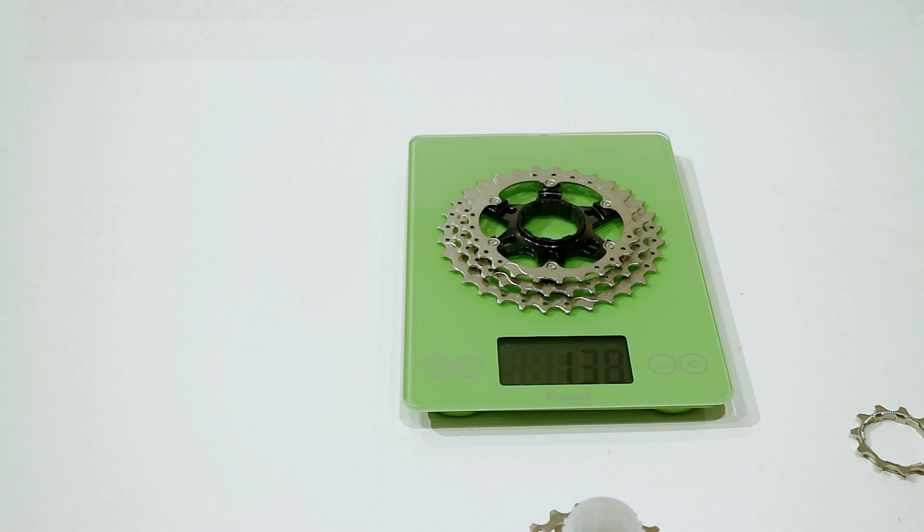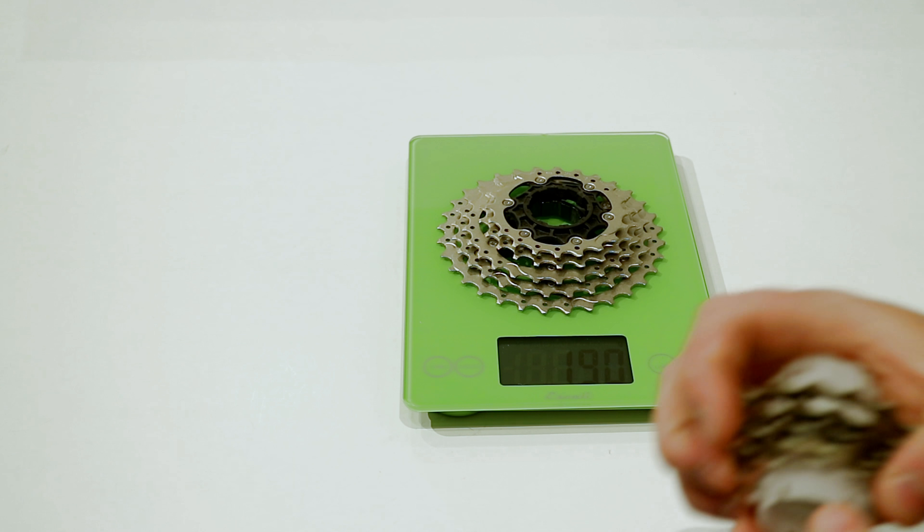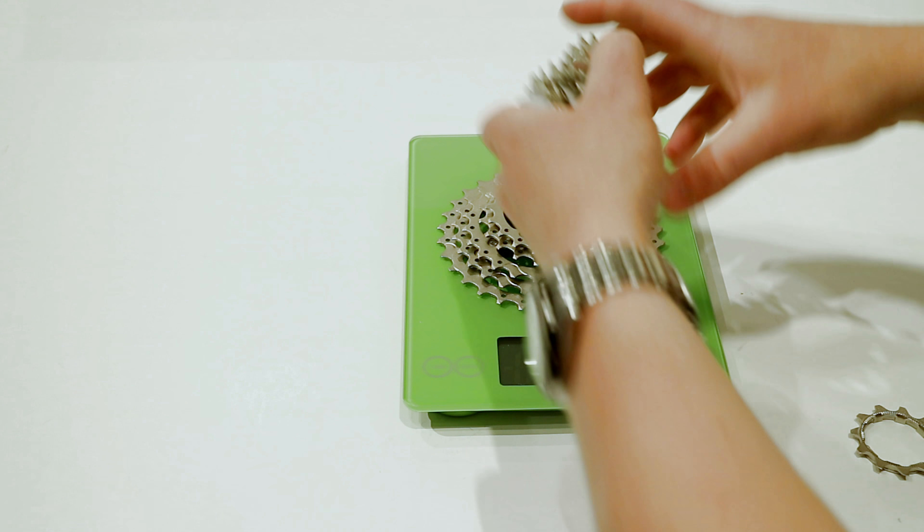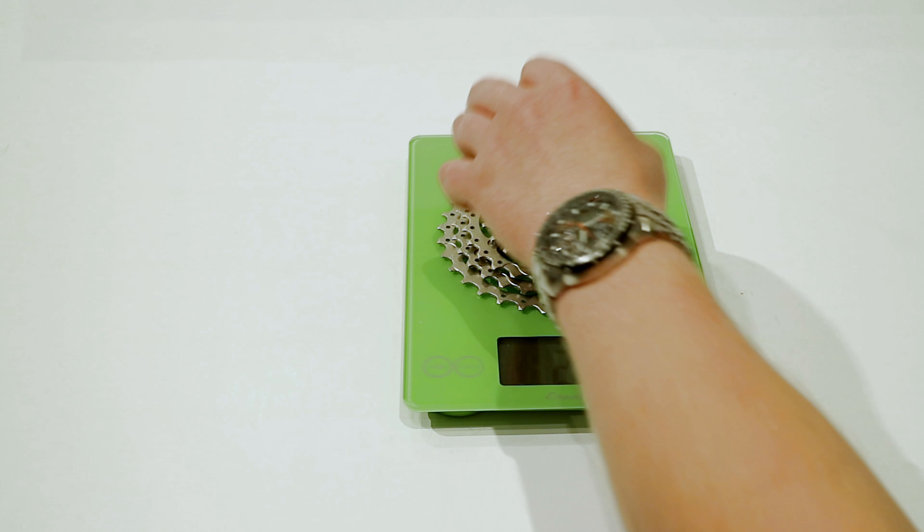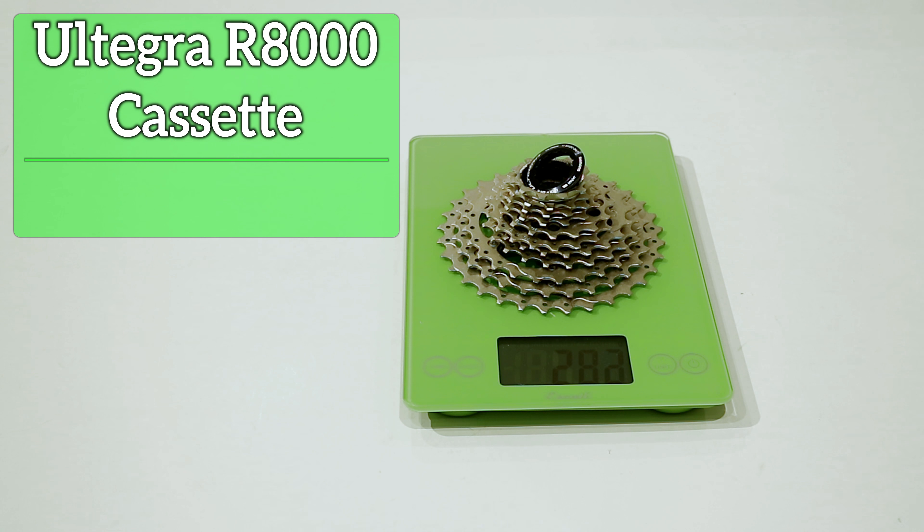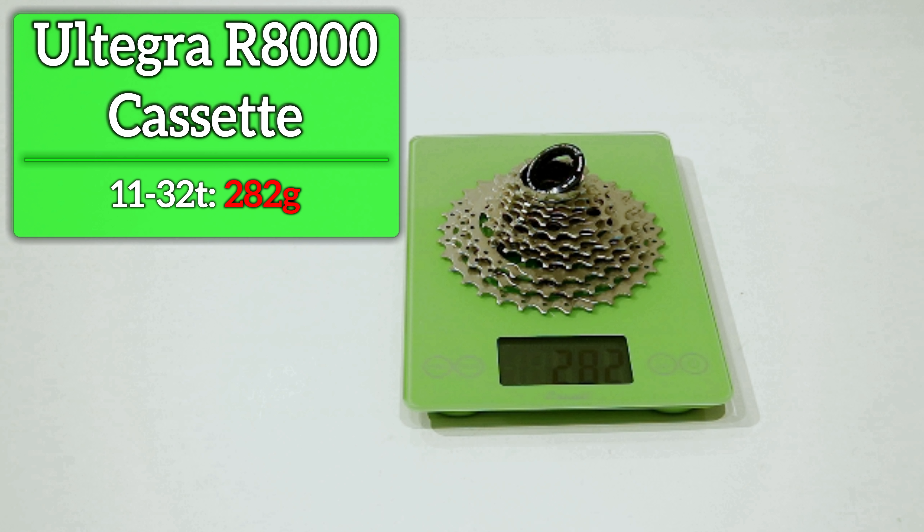So if we put the cassette on, we'll go ahead and place all of our cogs right on. Your total weight for this cassette and lock ring is going to come in at 282 grams.